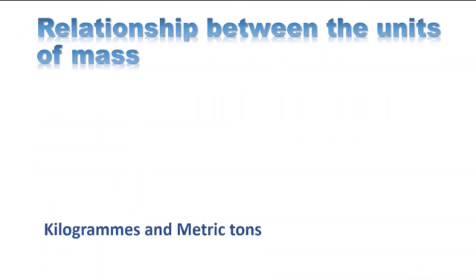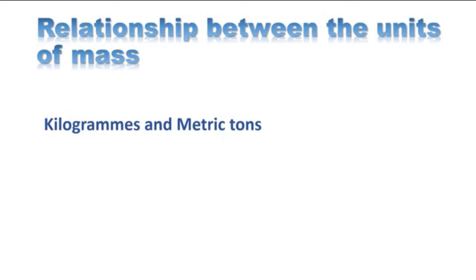Now let us see the relationship between kilograms and metric tons. Remember, one ton is equal to one thousand kilograms. This is a very simple relationship, and this is the only main theory part you have in this lesson. So if you need to convert tons to kilograms or kilograms to tons, let us see what we should do.